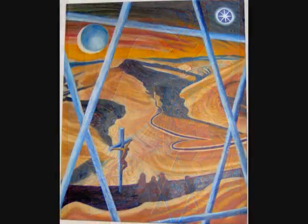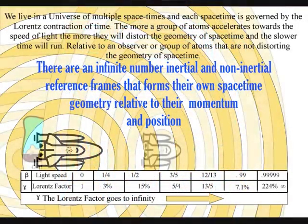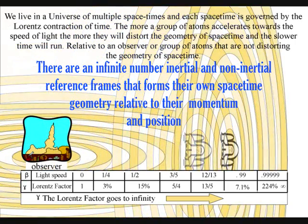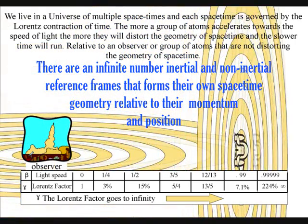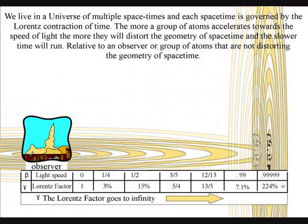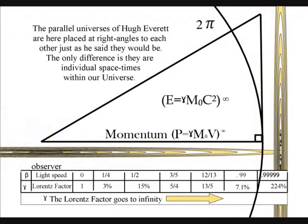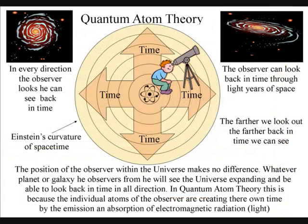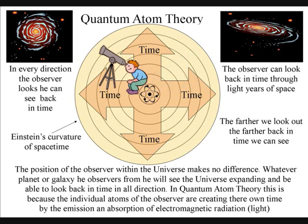In this theory there is no universal time because the universe is made up of an infinite number of reference frames that have their own proper time relative to their momentum and position. Therefore we are all in a unique position at the centre of our own reference frame and can look back in time in all directions at the beauty of the stars.